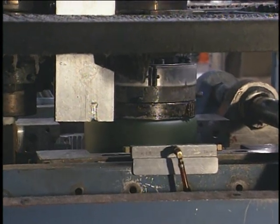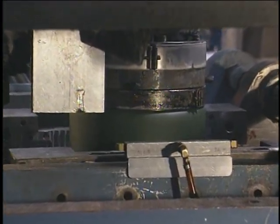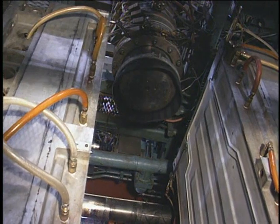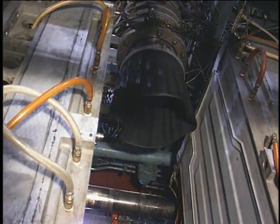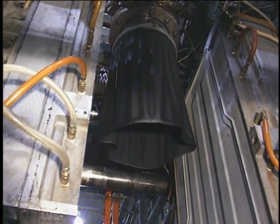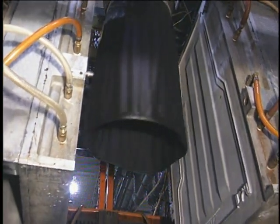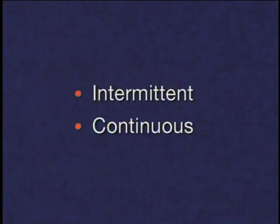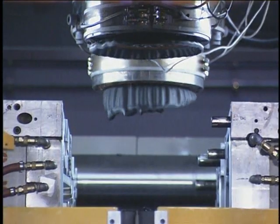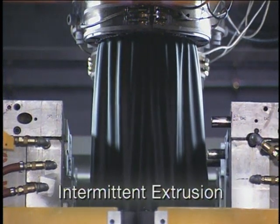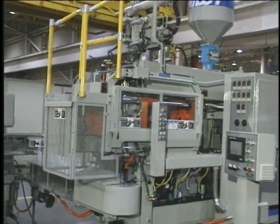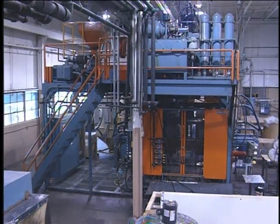The process of extrusion blow molding involves applying heat and pressure to thermoplastic resin to produce what is called the melt. This melt is then forced through a die to produce a parison, which is then dropped, trapped, or conveyed to an open blow mold for subsequent blow molding. Extrusion blow molding uses either an intermittent or continuous method for the formation of the molten parison. Intermittent extrusion produces a parison only when the blow mold is ready, using either a reciprocating screw or an accumulator and RAM style machine.